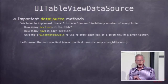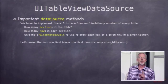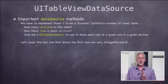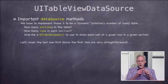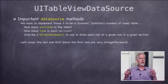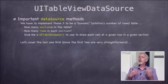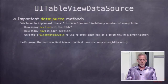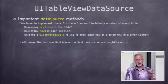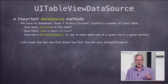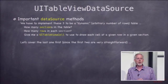So what are the important methods in the data source protocol? There are really three important ones: how many sections are in this table, how many rows are in each section, and then give me a UITableViewCell — a view I can use to draw this row. The table view knows how much data there is and constantly asks you for the data by requesting this UITableViewCell over and over. Let's cover the last one first because it's the most important. Getting the cell for each row is a little more complicated, so let's talk about that one first.